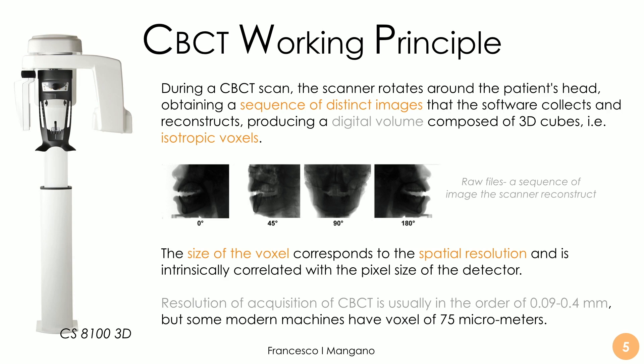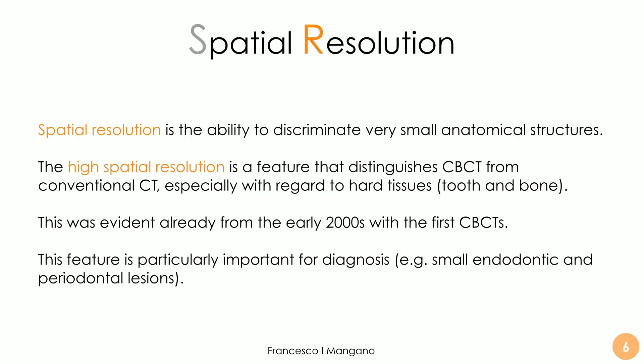The resolution of acquisition of CBCT is usually in the order of 0.09 to 0.4 millimeters depending on the machine. Some modern machines have a voxel size of even 75 micrometers — so a very, very small voxel. Spatial resolution is the ability to discriminate very small anatomical structures.